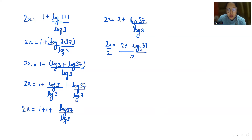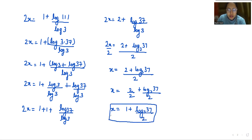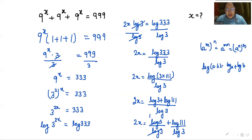Now I'm going to divide both sides by 2, so x = 1 + log₃(37) / 2. This is the value of x. I hope it's clear and you find it useful, so please give us a thumbs up and do subscribe to my channel. Stay tuned!